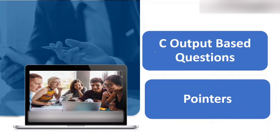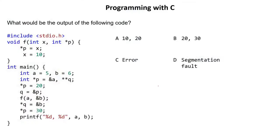Today the topic of discussion is C output-based questions on pointers. We will discuss various questions on pointers. The question gives a main function and one function call, and you have to predict what will be the output of the following code — either A, B, C, or D. Let's start with the solution.